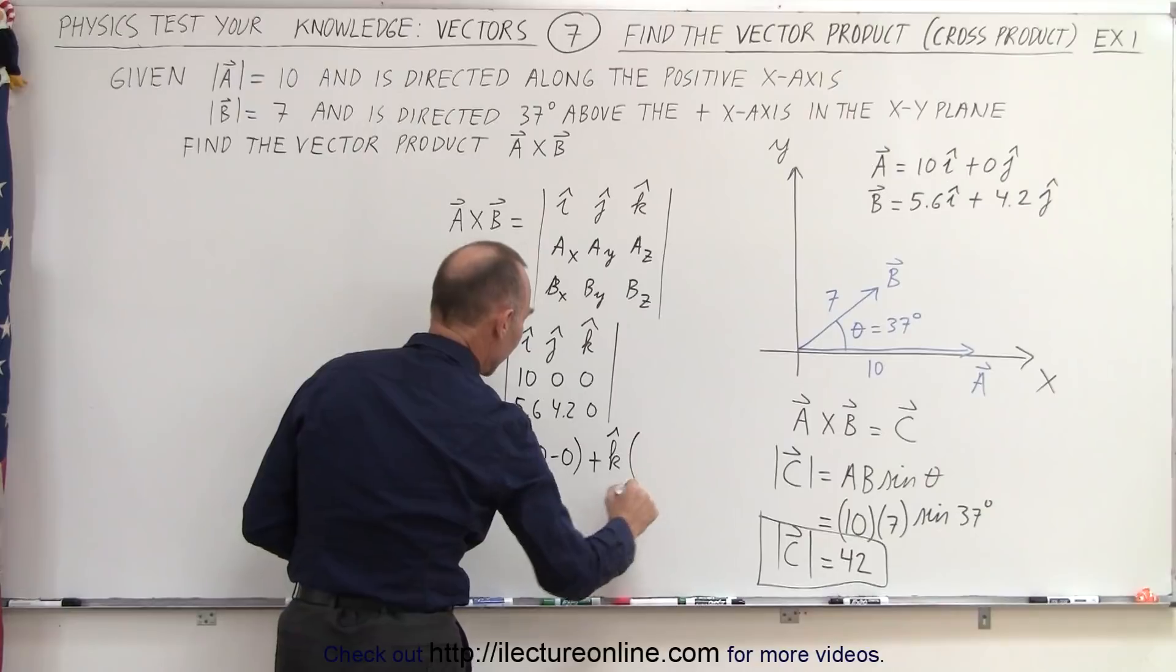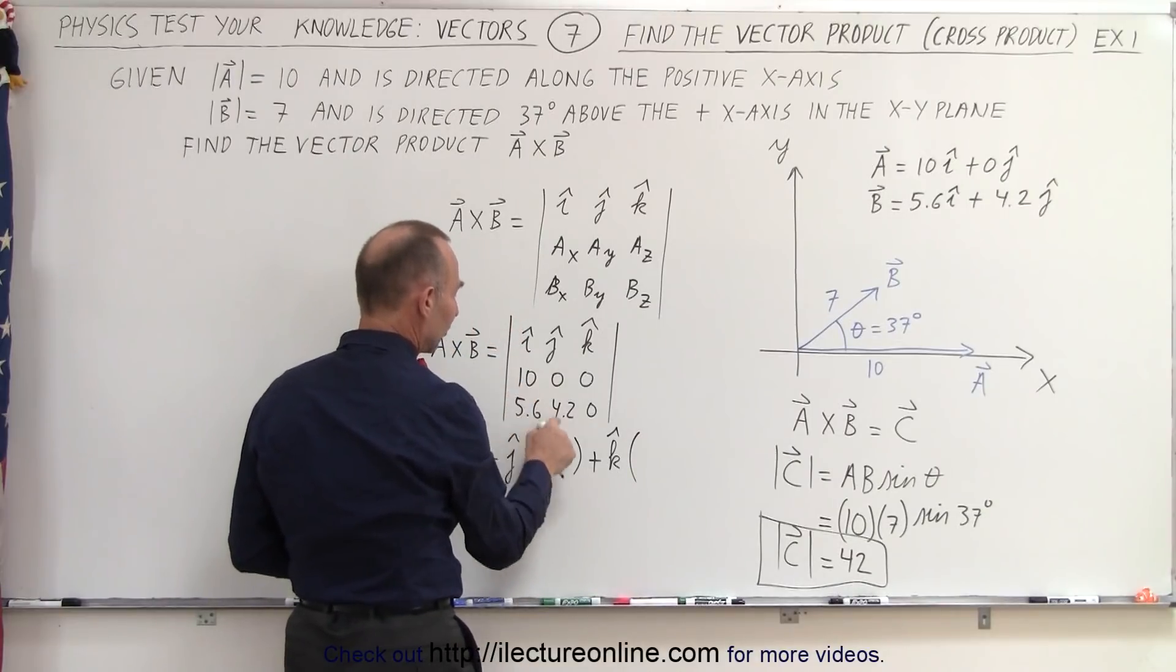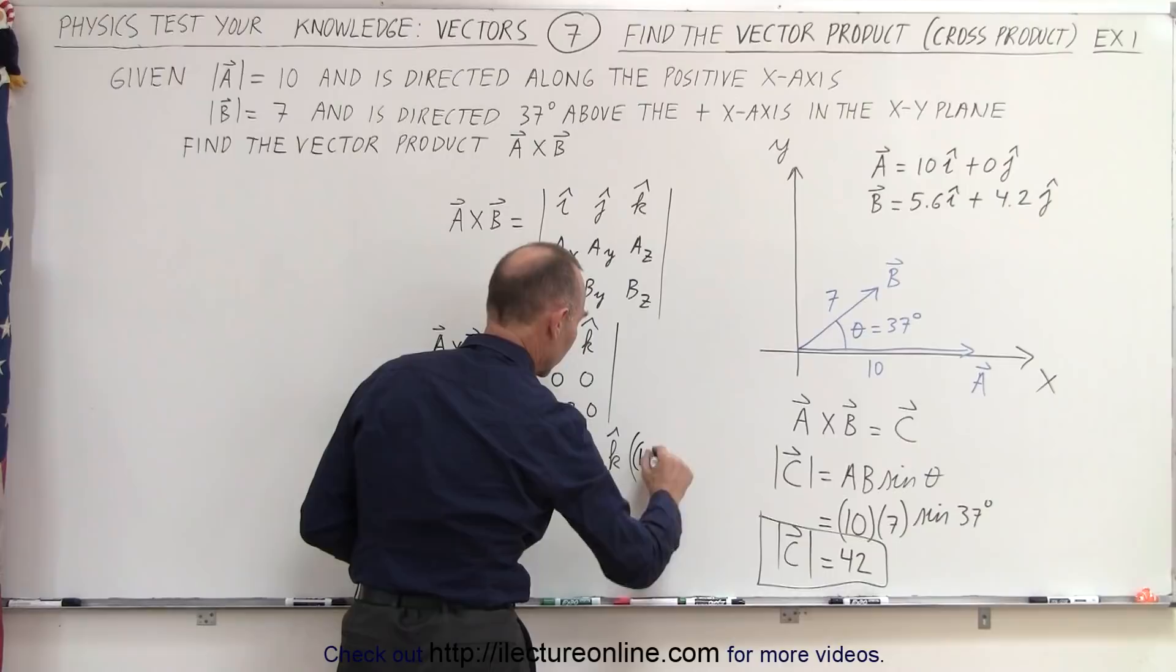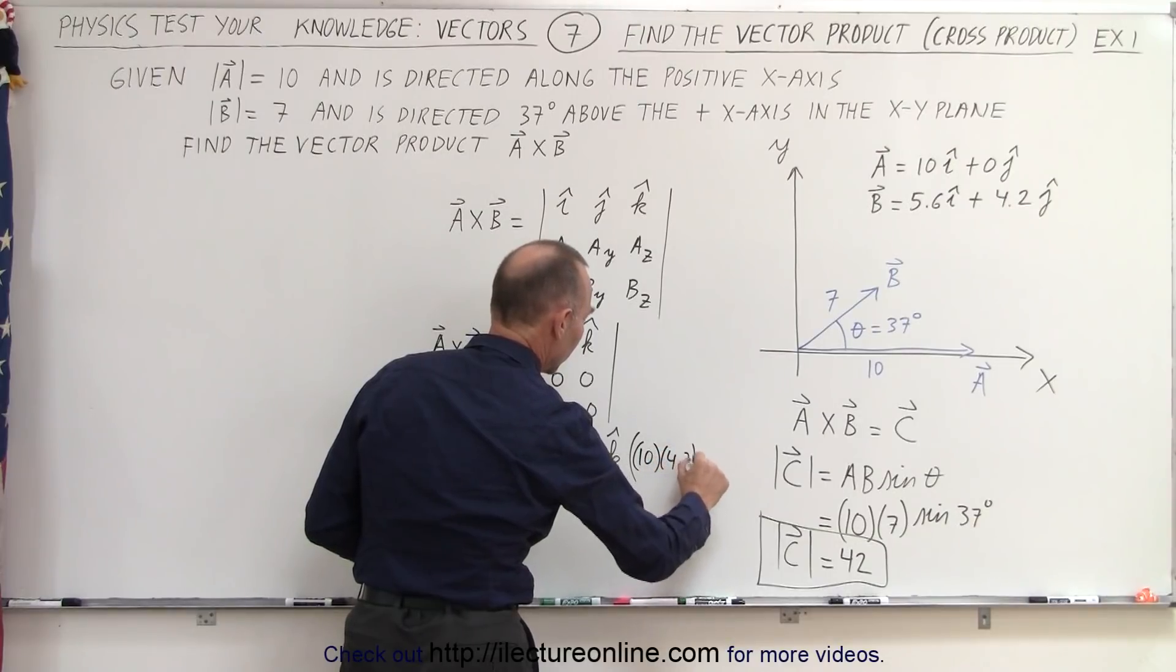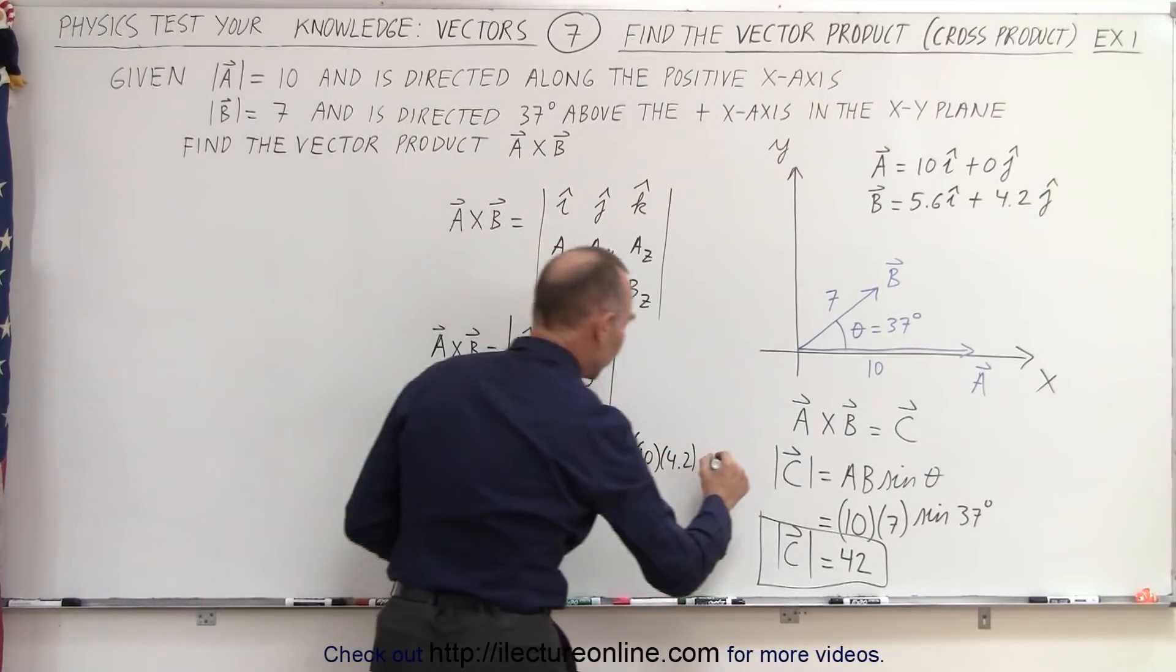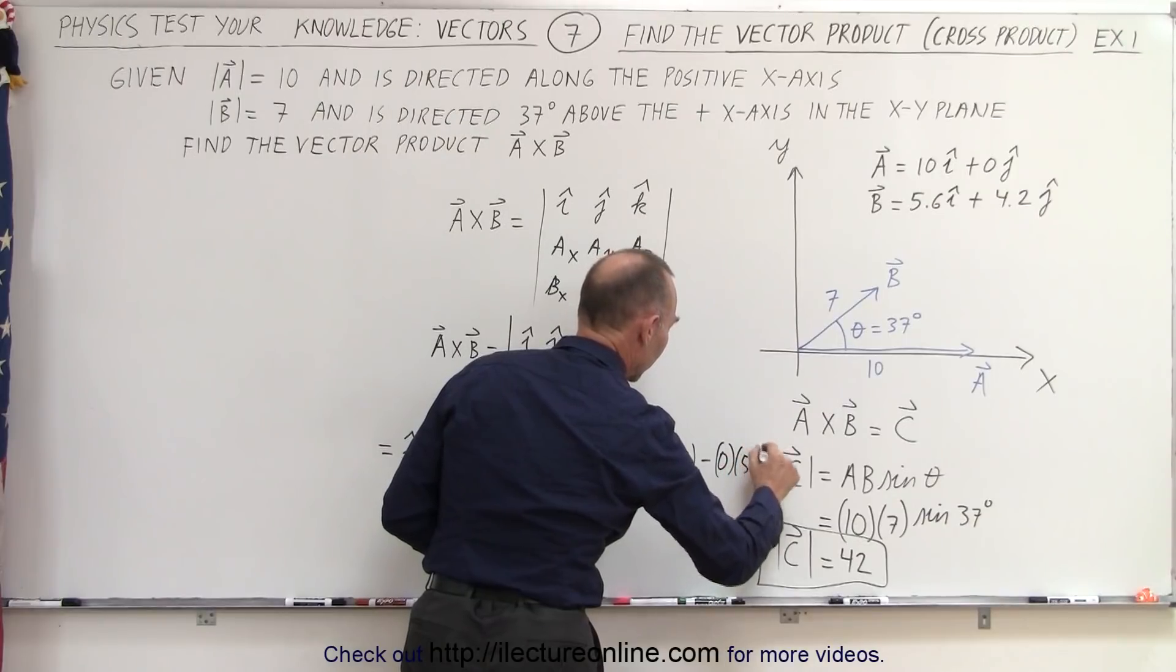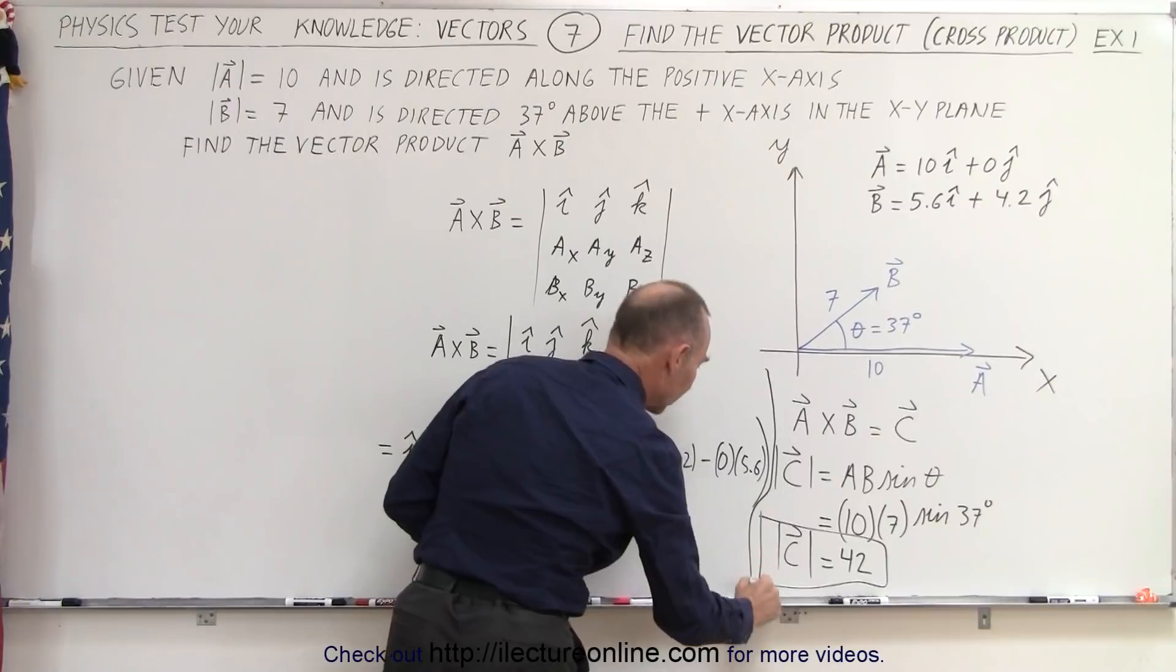Plus K times, so here we have 10 times 4.2 minus 0 times 5.6. Running out of room there, so make sure that we don't get confused.